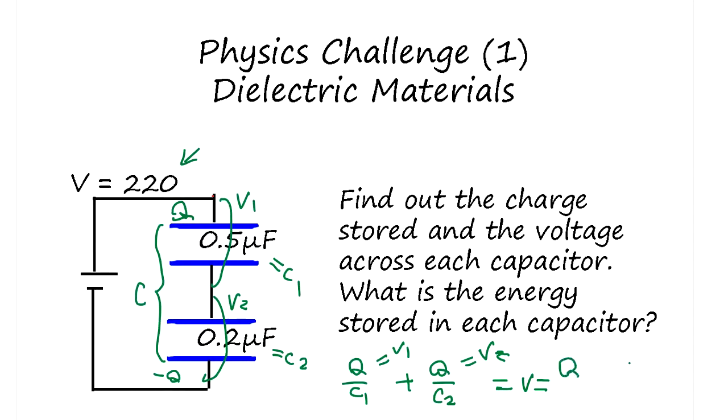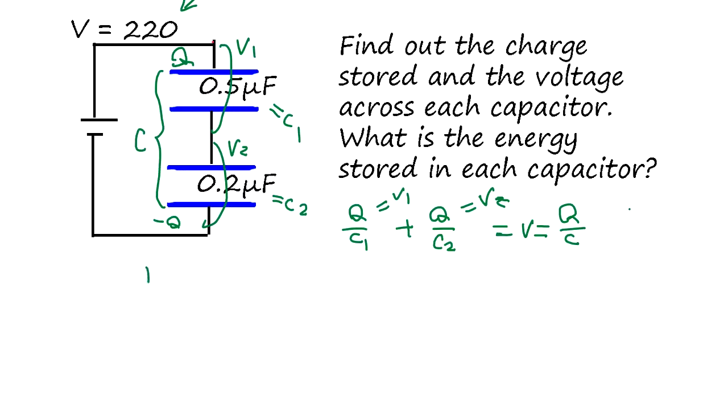So we know the total capacitance C equals C1 times C2 over C1 plus C2. So 0.5 microfarads times 0.2 microfarads, divided by 0.2 microfarads plus 0.5 microfarads. That's the total capacitance.